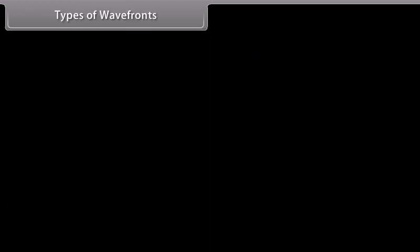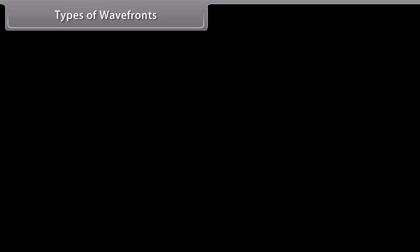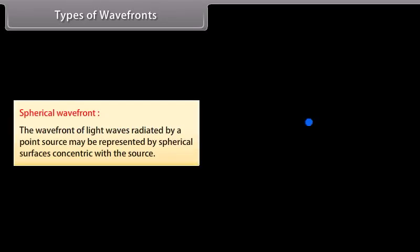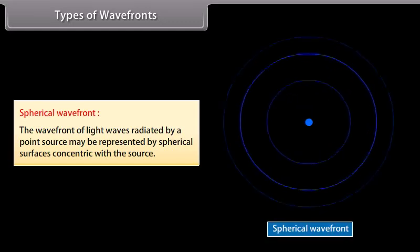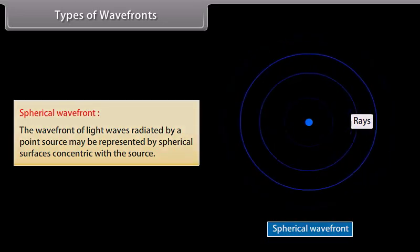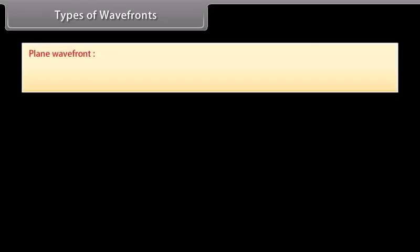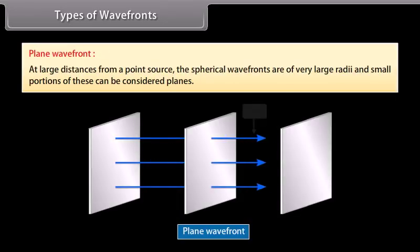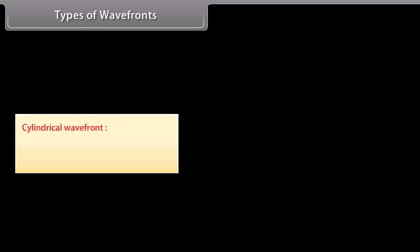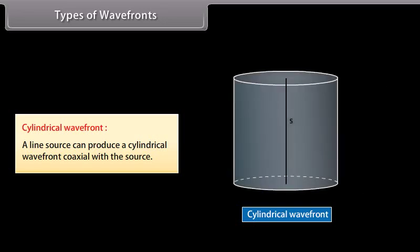Types of wave fronts: Spherical wave front — the wave front of light waves radiated by a point source may be represented by spherical surfaces concentric with the source. Plane wave front — at large distances from a point source, the spherical wave fronts are of very large radii and small portions of these can be considered planes. A line source can produce a cylindrical wave front coaxial with the source.